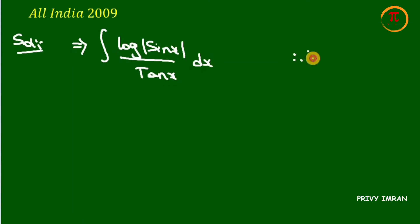Let log |sin x| equal t. Now differentiate with respect to x on both sides. Then 1 over sin x times the internal derivative cos x equals dt/dx.